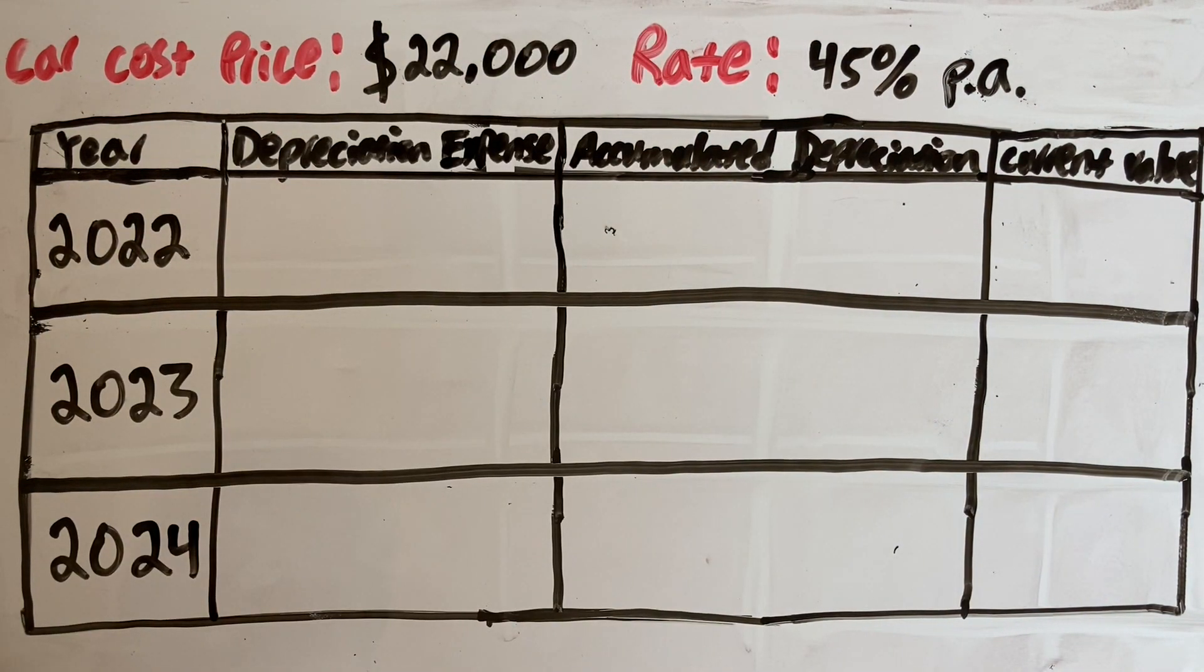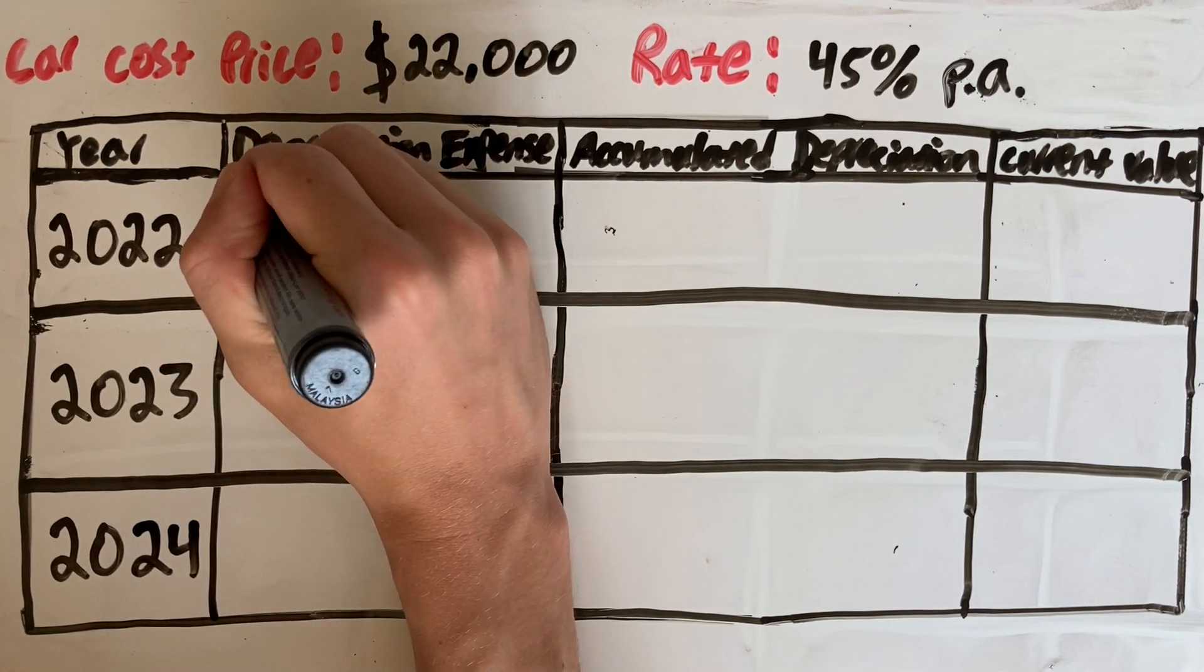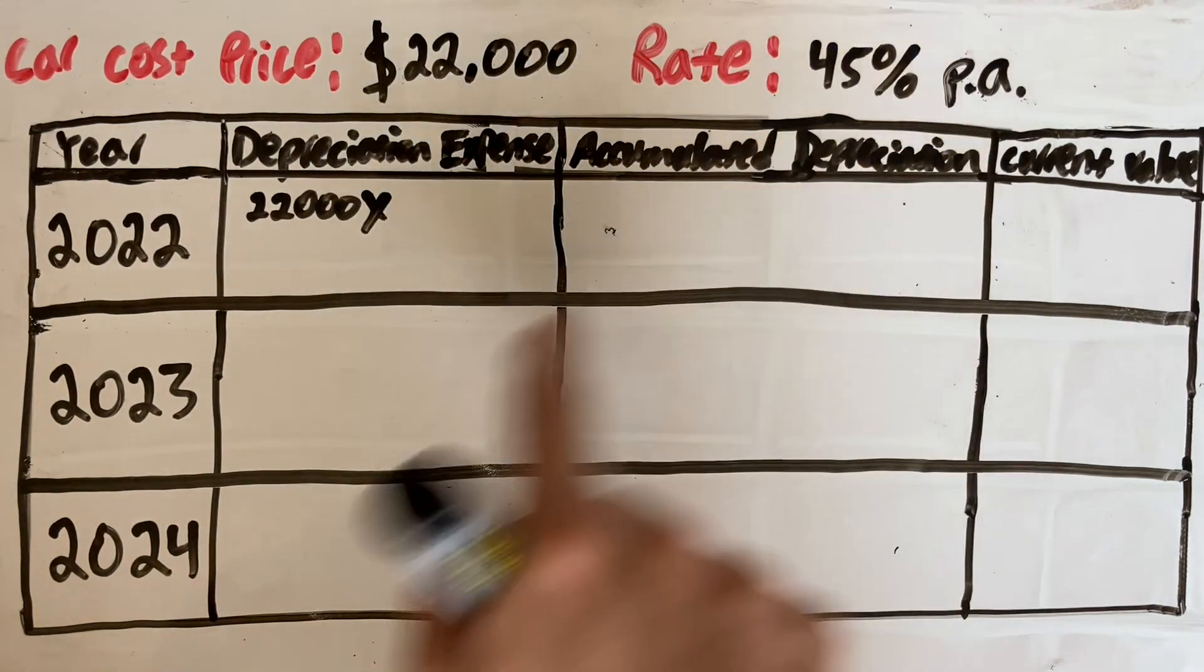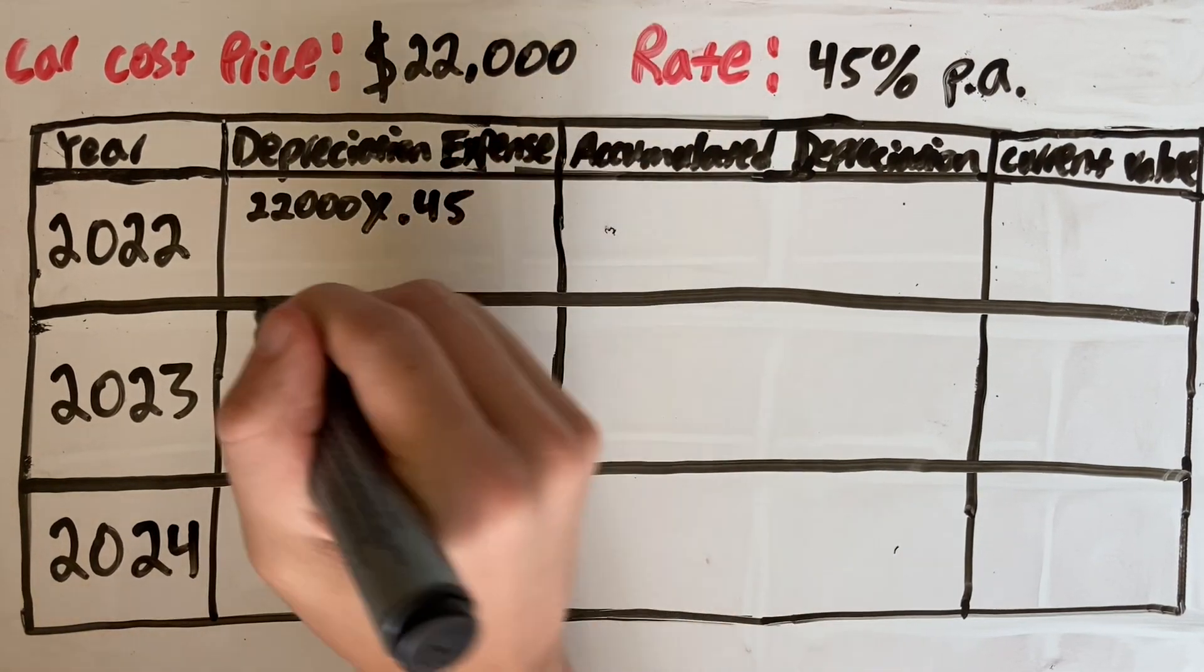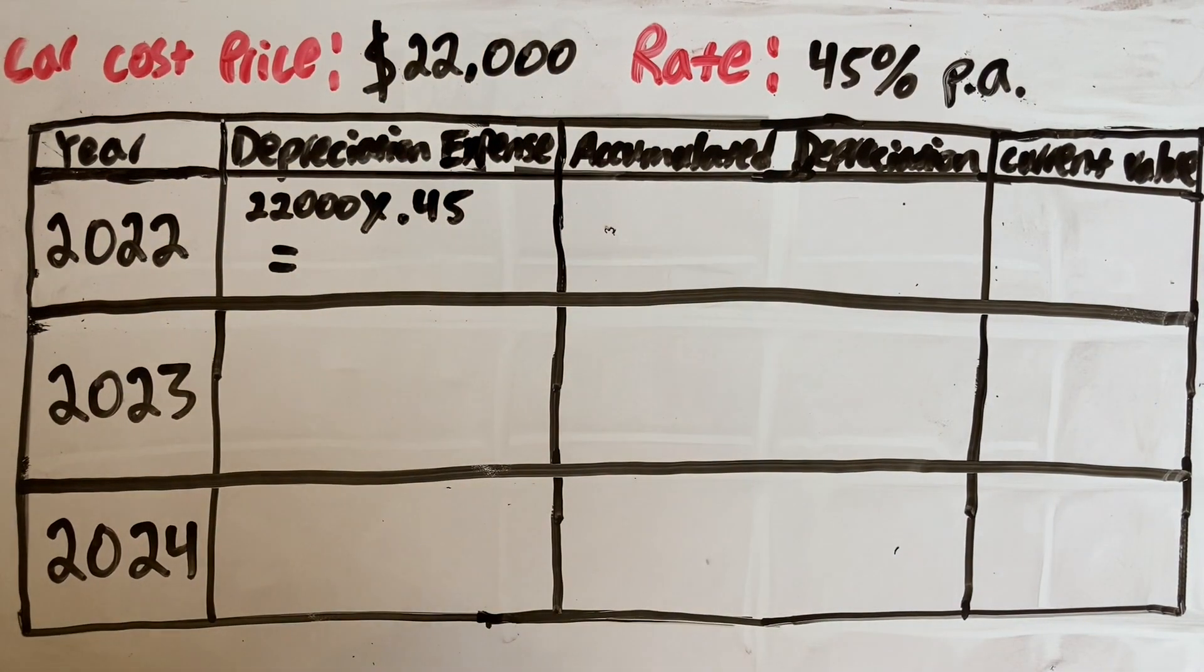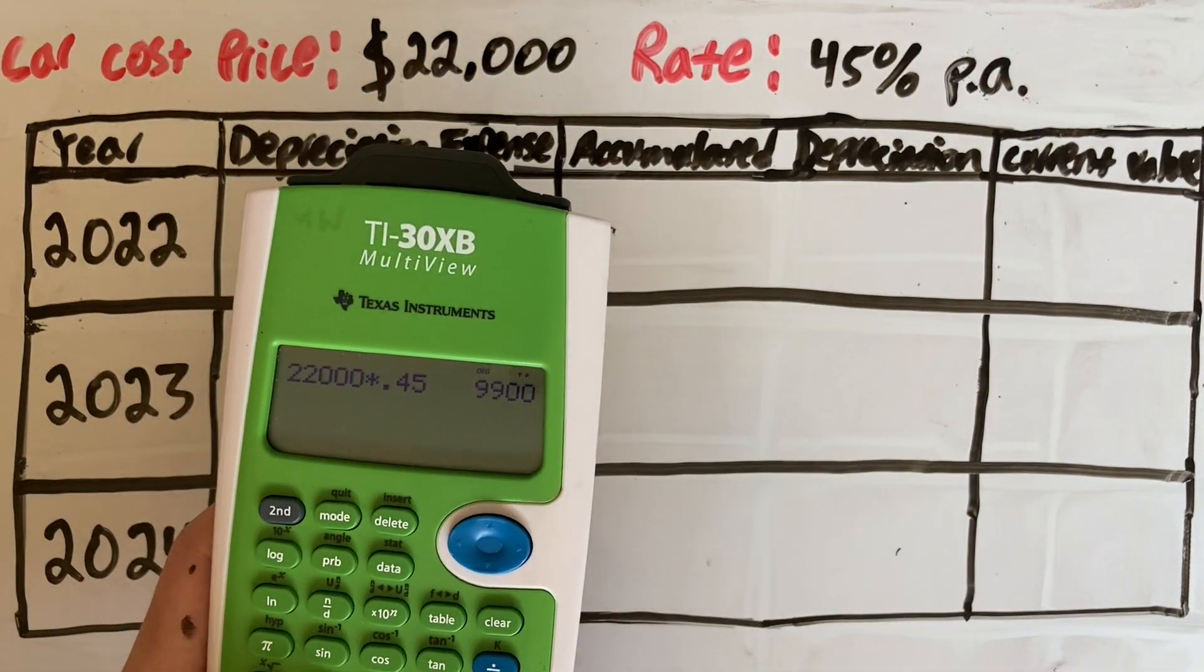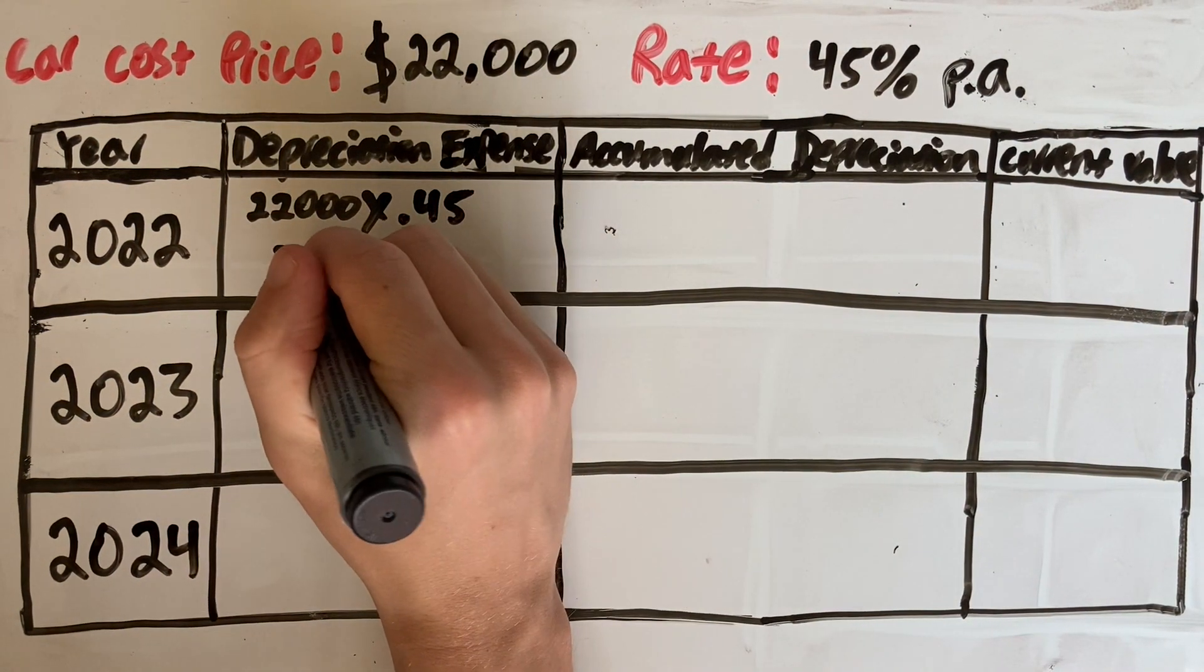Let's do this for the years 2022, 2023, and 2024. If we bought the car in 2022, it's worth $22,000. The depreciation expense for that year we're going to find by taking that value, its current value of $22,000 and multiplying it by its rate of depreciation. So 45%, but we don't put 45%, we put 0.45. If you grab your calculator, $22,000 times 0.45, that's going to give you $9,900. So the depreciation expense for 2022 is $9,900.